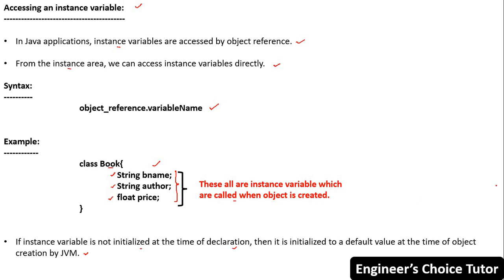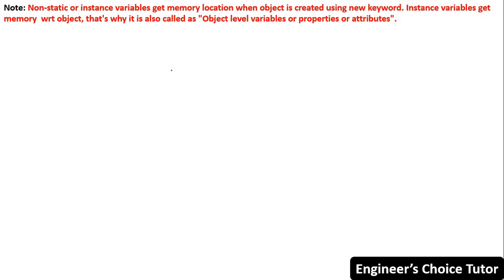For example, if the data type is String, the default value is null. Non-static or instance variables get a memory location when the object is created using the new keyword. Instance variables get memory with respect to objects — that's why they are also called object-level variables, properties, or attributes.